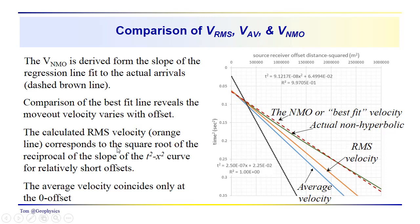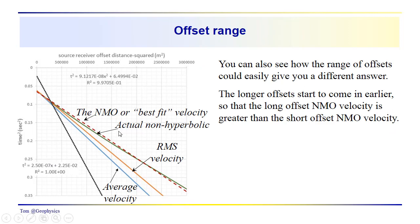So the RMS velocity corresponds to the square root of the reciprocal of the slope of the T squared X squared curve for relatively short offsets. The average velocity coincides only at T zero. This line here would come in right at the actual T zero.